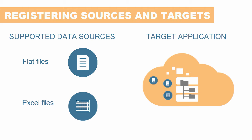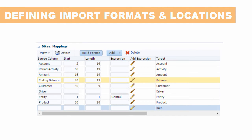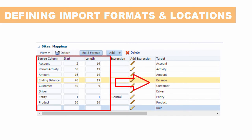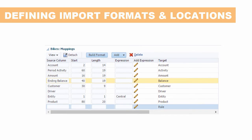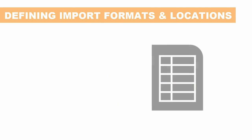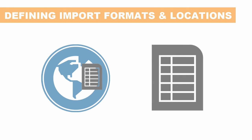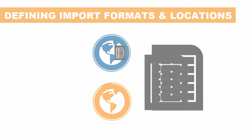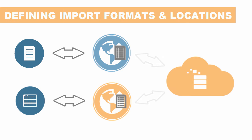Multiple source files can be mapped to a single Profitability and Cost Management application. Next, you create import formats that define the layout of source data files. You specify how to map and transform columns or fields to your target during the data load process. After defining import formats, you create locations and select an import format for each location. You can use the same import format for multiple files, but a location is associated with one source file, enabling you to create source-specific metadata mappings for each location.